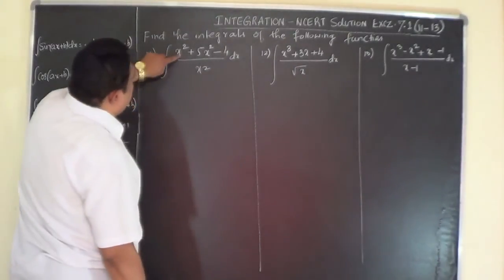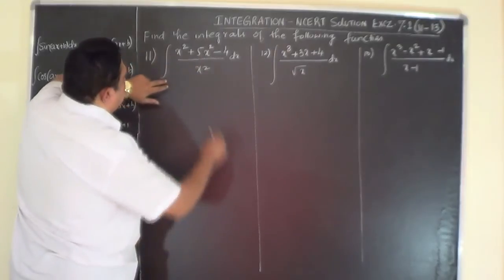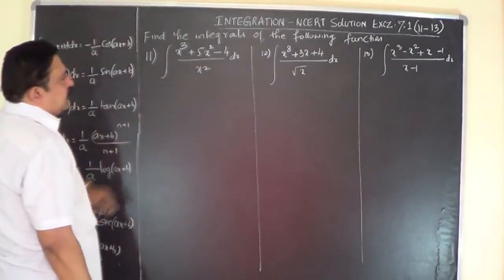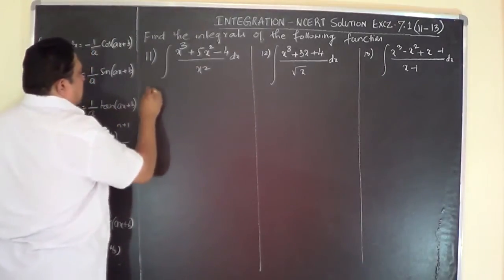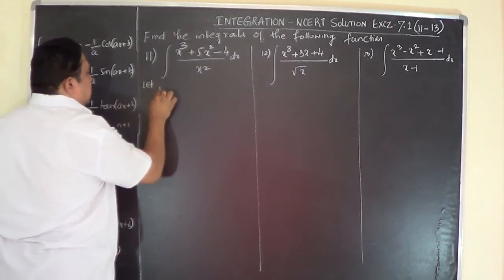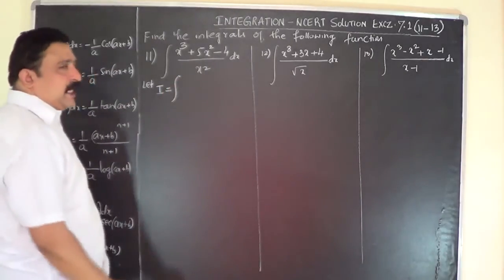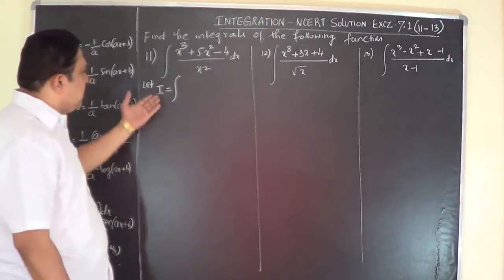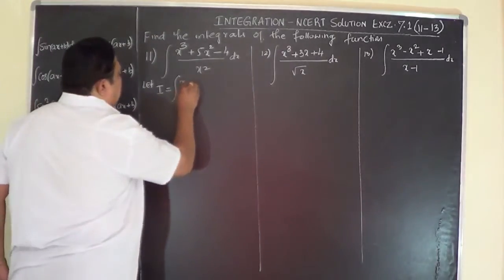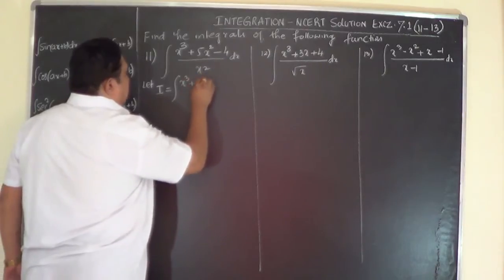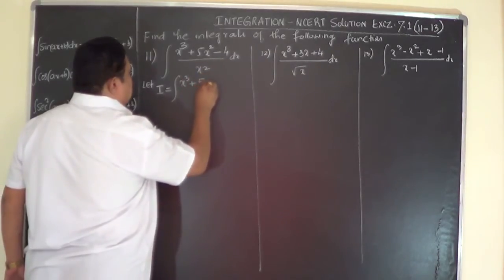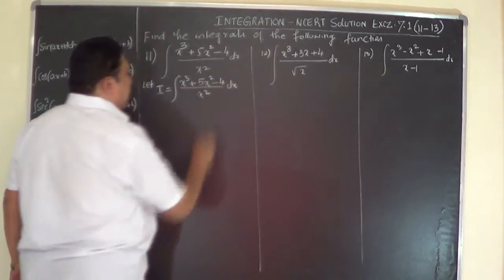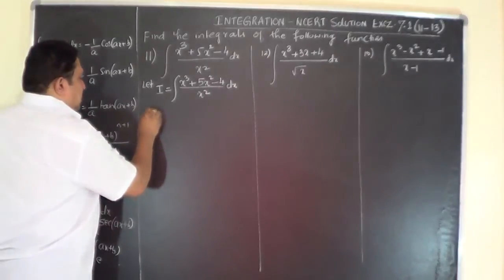This is x squared plus 5x squared — this is not x squared, maybe x cubed, because the x squared term is already there. It is customary to call the given function before integrating as I, meaning the given integral. Write it as: I equals the integral of (x³ + 5x² - 4) divided by x² dx.